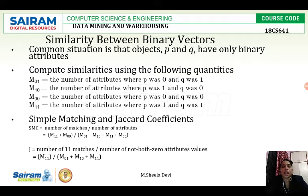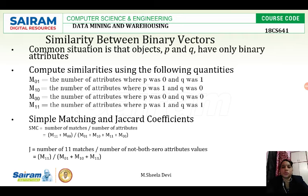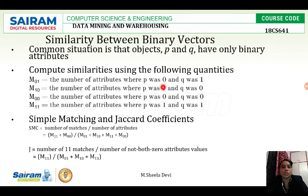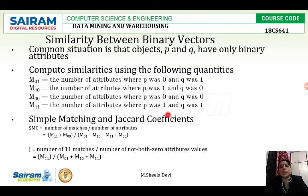Similarity between binary vectors: the common situation is that objects p and q have only binary attributes — they can have either 0 or 1 as a value. We compute similarities using the following quantities: m01 is the number of attributes where p was 0 and q was 1; m10 is the number of attributes where p was 1 and q was 0; m00 is the number of attributes where p was 0 and q was 0; and m11 is the number of attributes where p was 1 and q was 1.